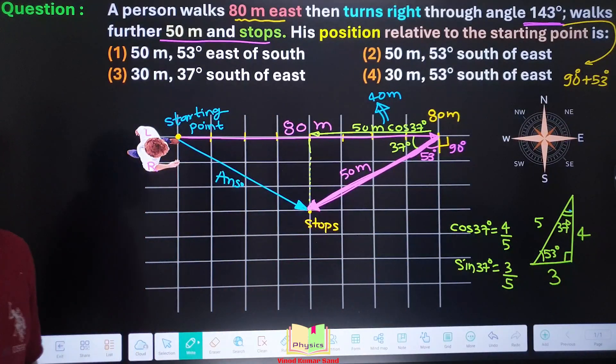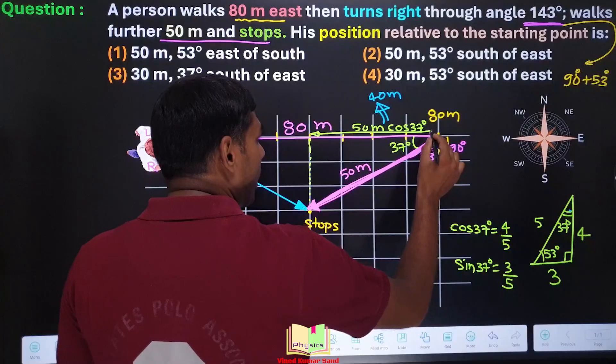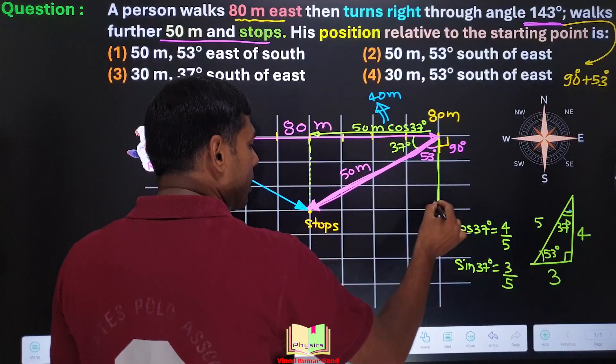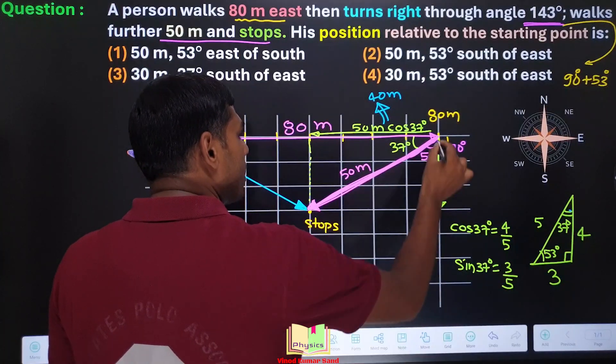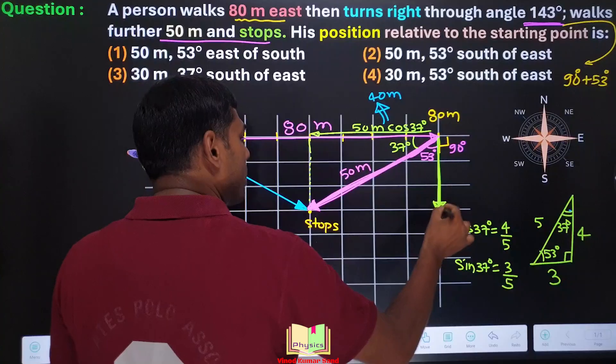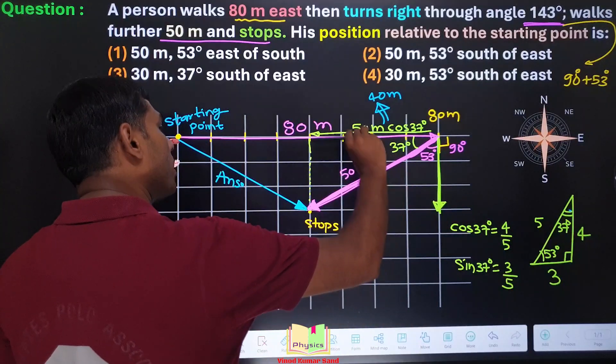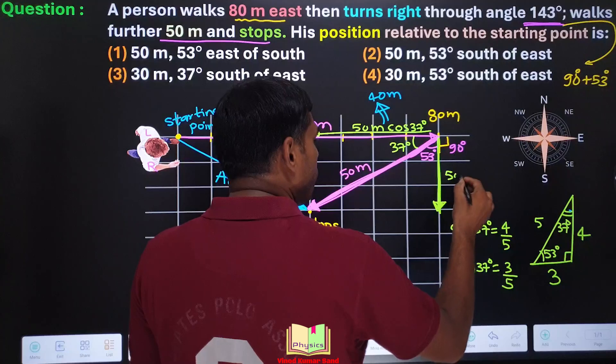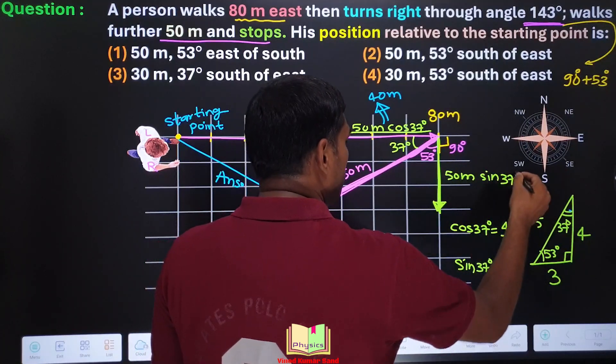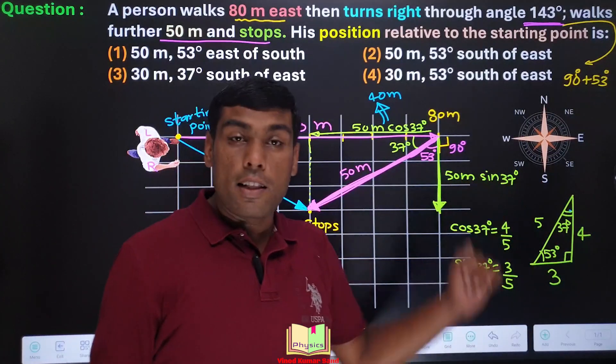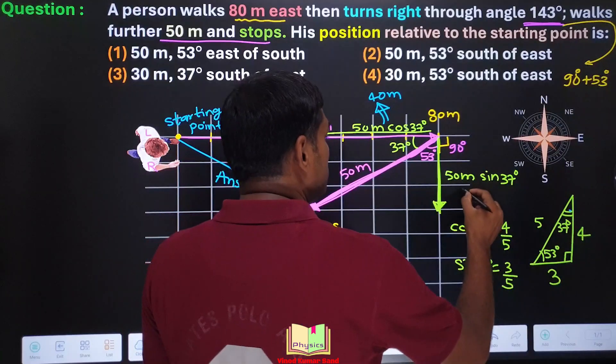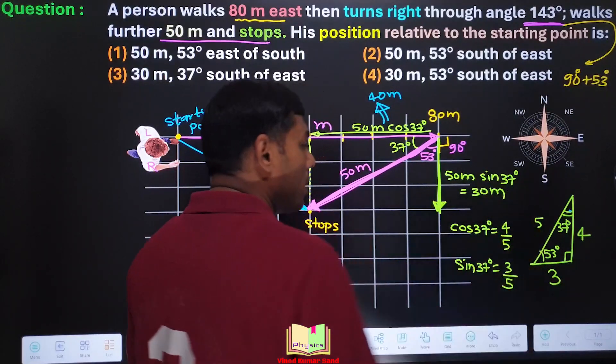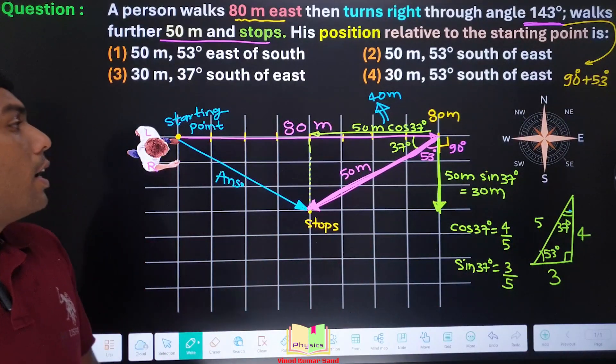Now this 50 meter length will have component down like this. This 50 meter had two rectangular components, 50 meter cos 37 and this would be 50 meter sin 37 degrees. Put here the value of sin 37 degrees, then this distance comes out to be 30 meters.